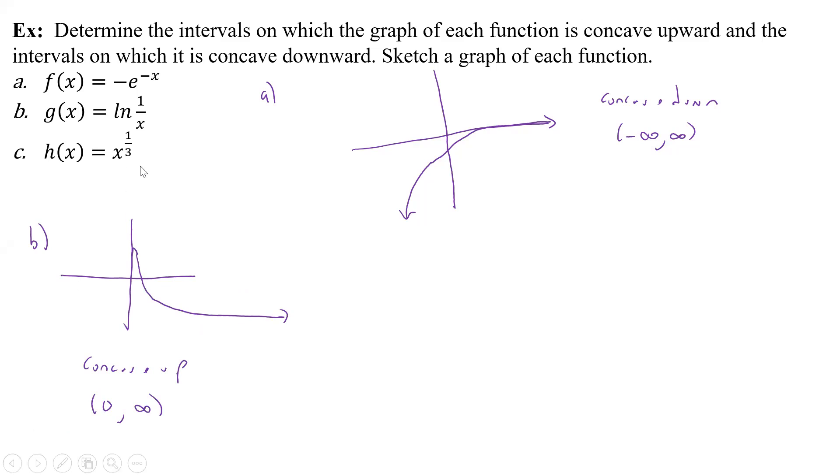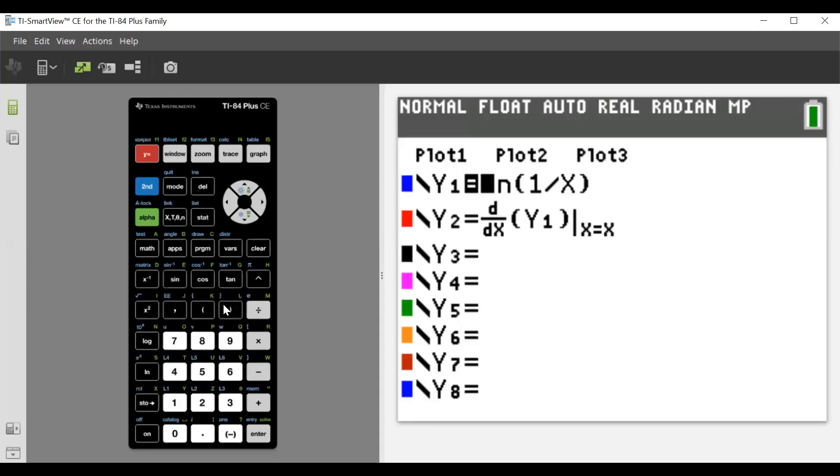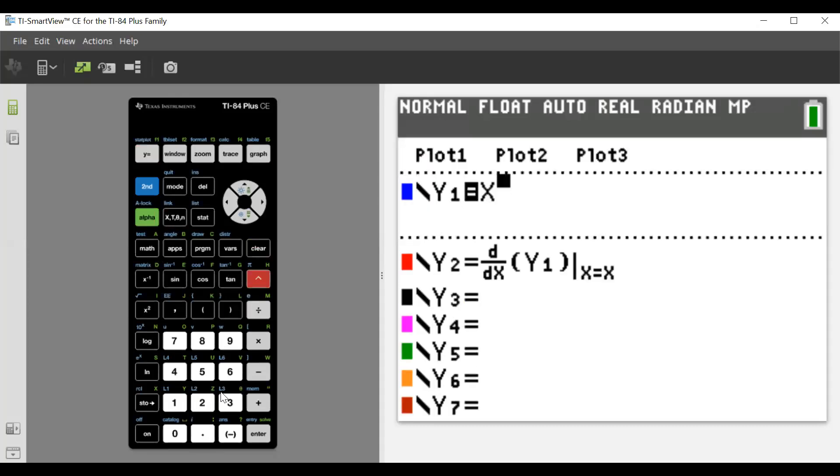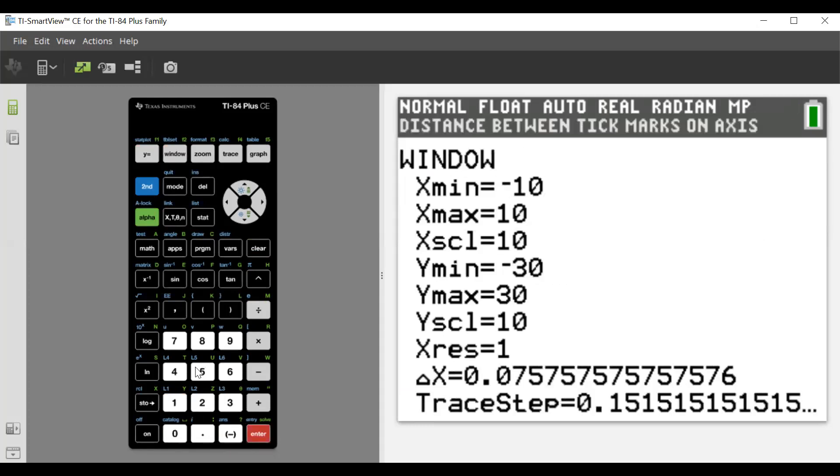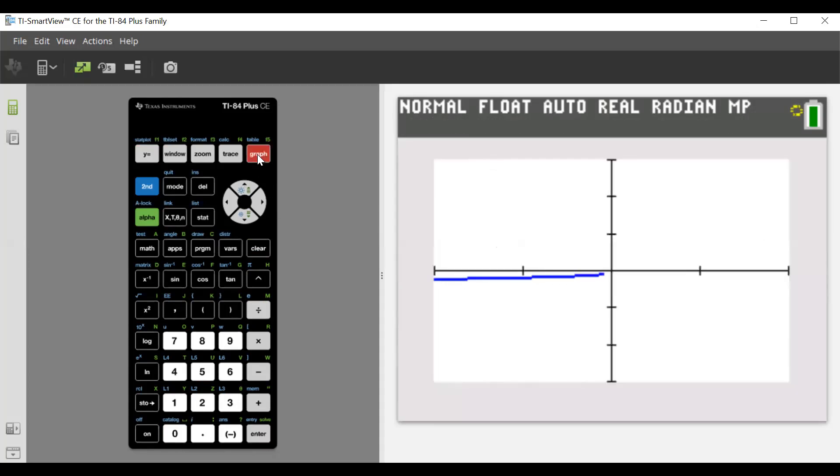Now, what about h(x) = x^(1/3), all right? Well, if we go in here and type in, and get rid of that, we have x^(1/3). Now we probably better put our window back out, let's go minus 10 to 10, let's go by 5, I don't know what we need, but let's start with that and see what we see.